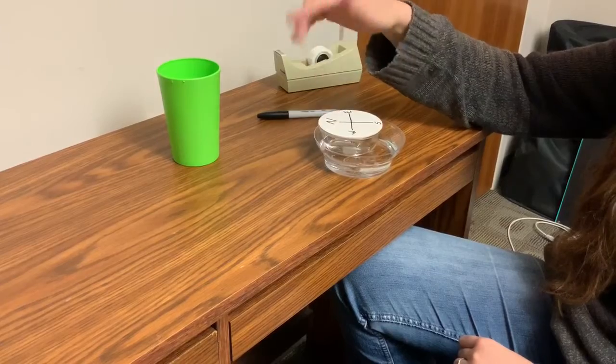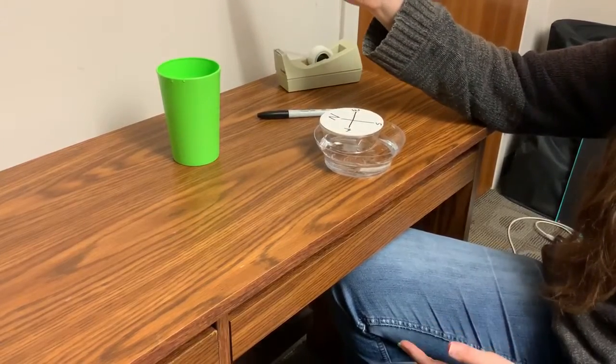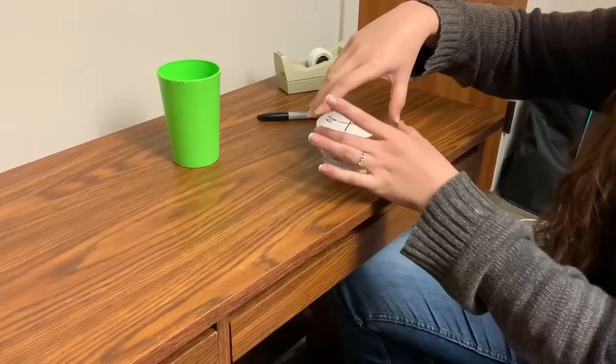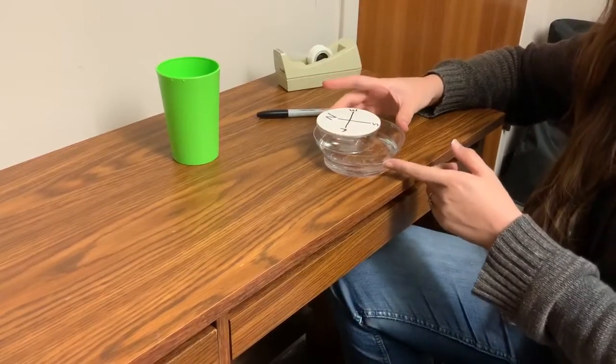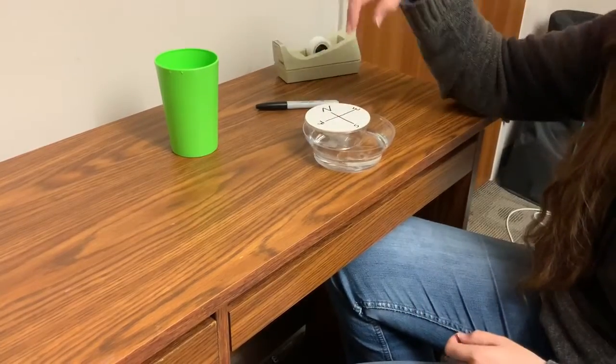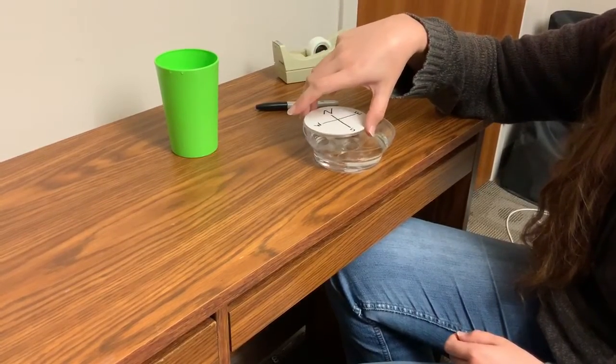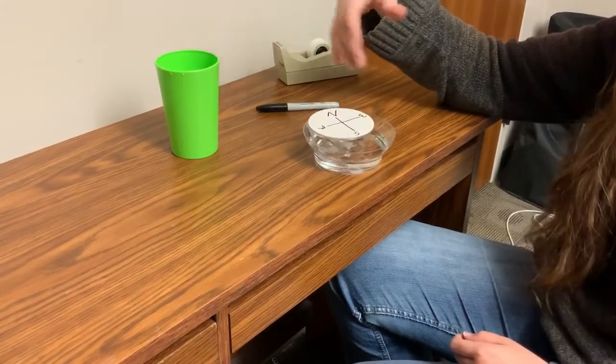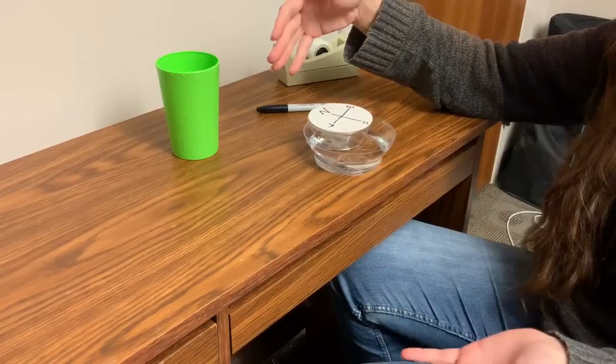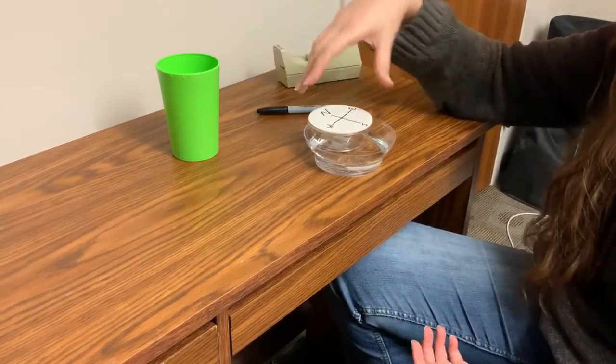So the N will either be accurate and pointing north or it's going to be pointing south because it needs to be reversed. This one is pointing north because I tried this out. But your adult can help you go outside and figure out based on the sun, which rises in the east, sets in the west, what's the general direction of north.